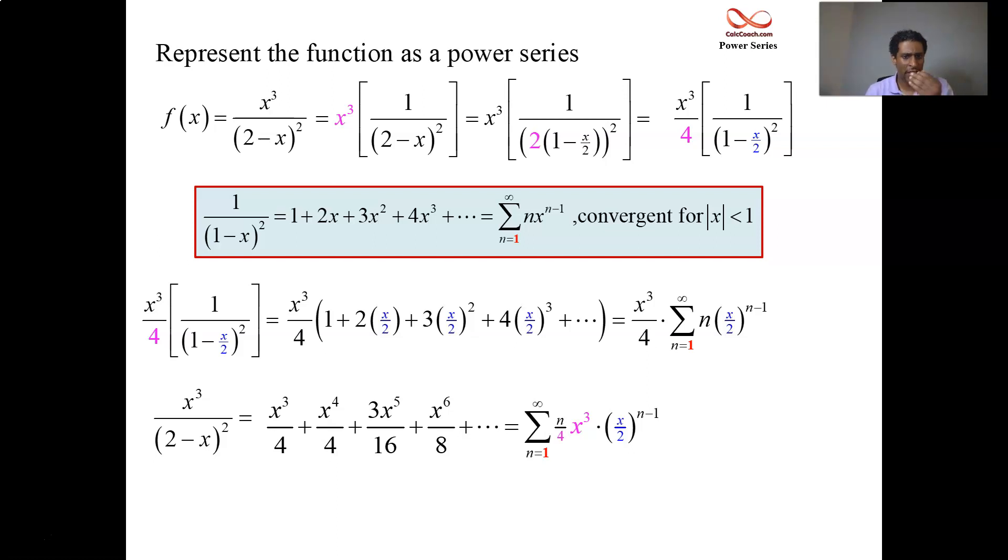In the summation, we can take the x cubed over 4 and bring it in. But we can do more than just bring it in, and we can incorporate it with the other parts that are already in there. You already have x who's raised to the n minus 1, and you are multiplying it by x to the 3. What do you do with that? You add the exponents, which ends up as x to the n plus 2. And then you can just take off the 2 to the n minus 1. And you have exactly your power series for your function f of x, who is x cubed over the quantity of 2 minus x that is squared.